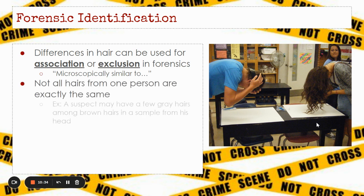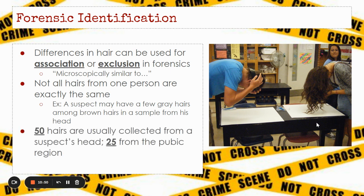Not all hairs from one person are exactly the same. For example, a suspect may have a few gray hairs and brown hairs in a sample from their head — not every single hair you have is the same. That makes it very difficult to individualize hairs to a particular person. When we collect samples of a suspect's hair, we typically collect 50 hairs from their head and 25 or so if they're from the pubic region. When we collect the hairs, we want them to be shed, not cut, because we want to be able to see the follicle part.